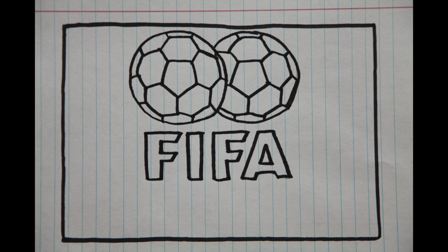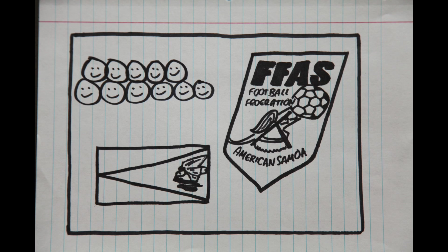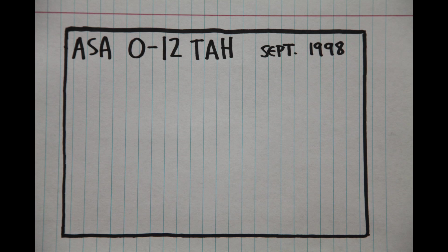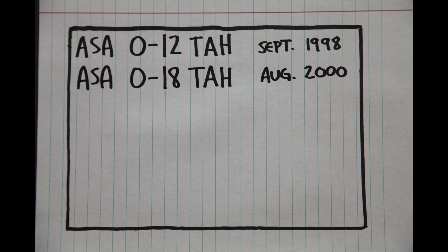After joining FIFA in 1998, American Samoa proceeded to spend its first 13 years going 0-29-0, with notable losses to Tahiti in September 98 where they lost 0-12, again to Tahiti in 2000 when it was 0-18.